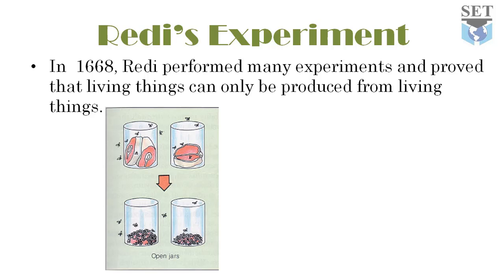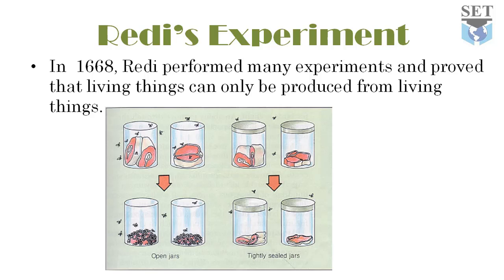Redi performed another experiment. He put dead snakes, pieces of meat, and dead fishes in separate bottles, keeping half of the bottles open and half completely covered. After a few days, maggots appeared only in the open bottles, while no maggots were found in the closed bottles. Some workers argued that maggots did not appear in the closed bottles because air — which they claimed was essential for biogenesis — could not pass through.